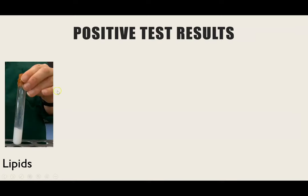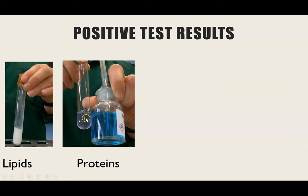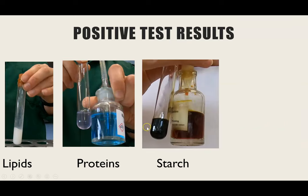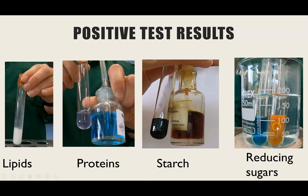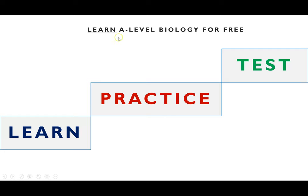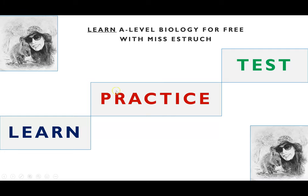To finish, here's a summary of all positive test results: lipids give a white emulsion; proteins give a purple-lilac colour with biuret; starch gives blue-black with iodine; and reducing sugars can give any colour from green, yellow, orange, to brick red with Benedict's — the darker the red, the higher the concentration of reducing sugar. You need to know the method and the positive test result for each. You can click the link to revisit any of the biological molecules mentioned in this lesson to learn the theory behind them.